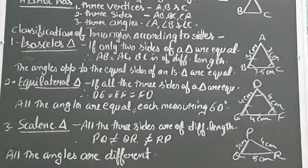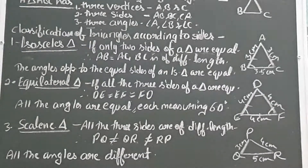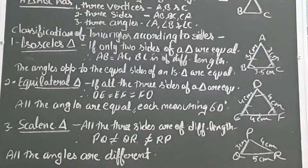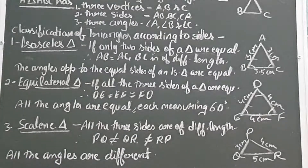The first type is the isosceles triangle. If only two sides of a triangle are equal, it is called an isosceles triangle. In triangle ABC, AB equals AC, both measuring three centimeters, whereas BC is a different length, measuring 3.5 centimeters. So if only two sides are equal, it is an isosceles triangle.